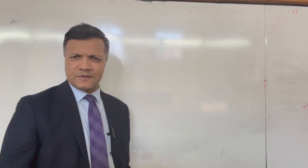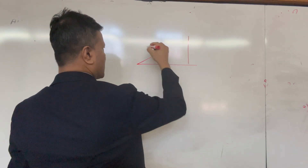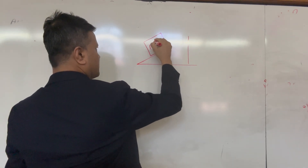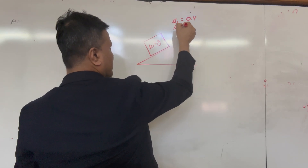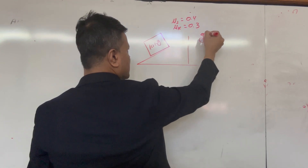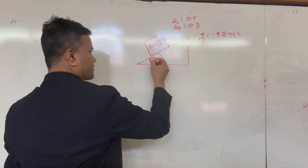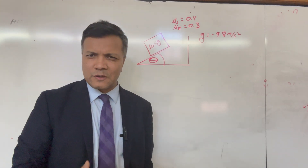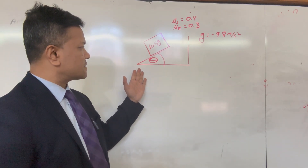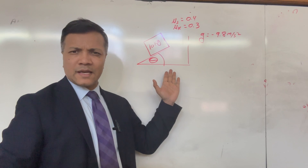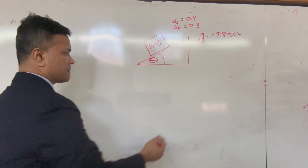In this tutorial we're going to derive the equation for a threshold angle. Let's consider a box: 10 kilograms, μs = 0.4, μk = 0.3, acceleration due to gravity = 9.8 m/s². The angle is not given — you have to find the threshold angle, which is the angle that will allow the box to start sliding on the incline.